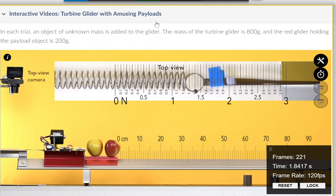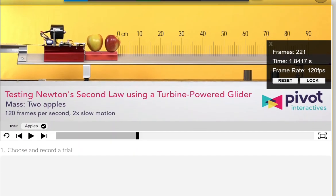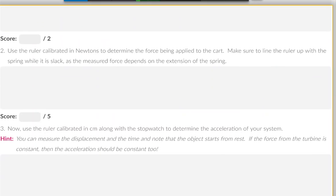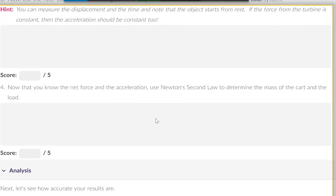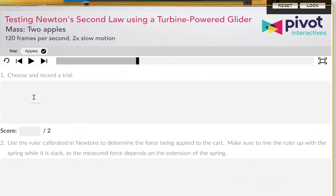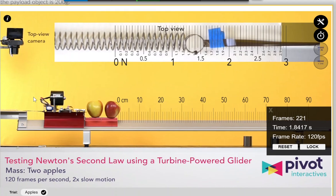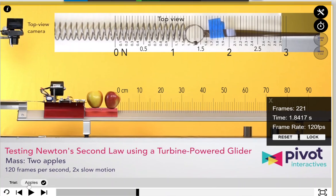So, they're telling you the mass of the turbine glider, the mass of the red glider that's holding the payload, the apples. And what they want you to do is to use Newton's second law to determine the mass of the cart and the load.